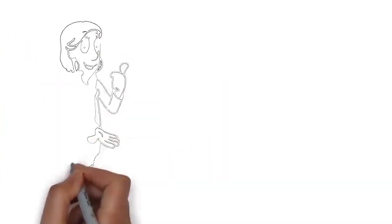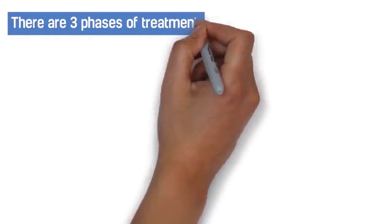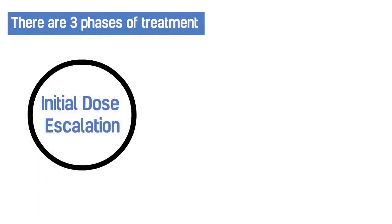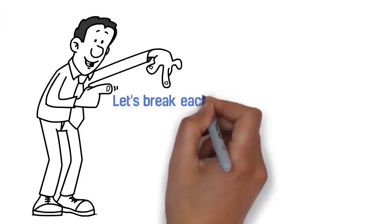Ready to learn more? Here's how it works. There are three phases of treatment: 1. Initial dose escalation. 2. Updosing. 3. Maintenance. Let's break each of these phases down.